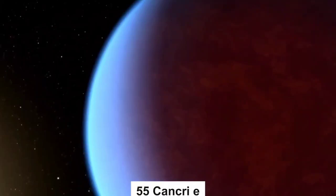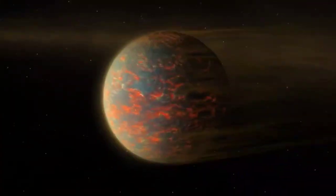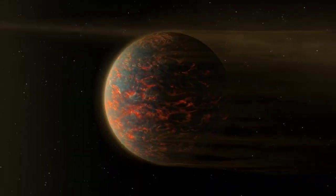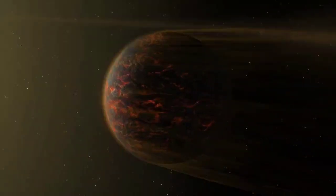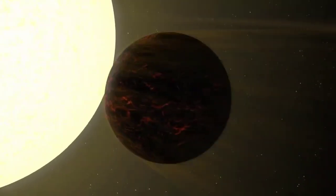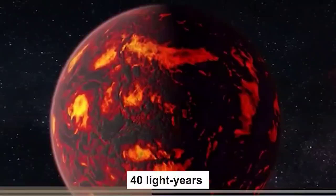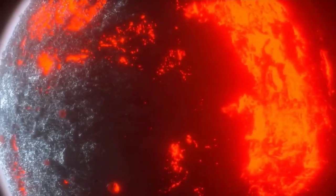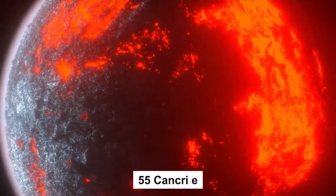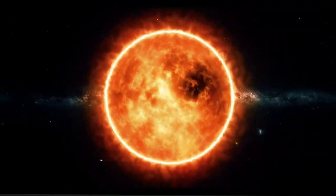The next horrifying exoplanet on my list today is 55 Cancri e. 55 Cancri e, also known as Janssen, is an exoplanet situated in the constellation of Cancer, about 40 light-years away from Earth. It orbits a G-type star named 55 Cancri A, which is similar to our Sun.